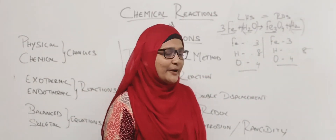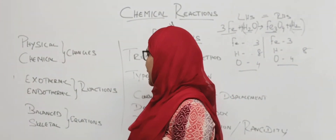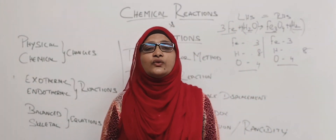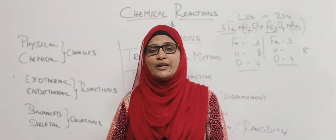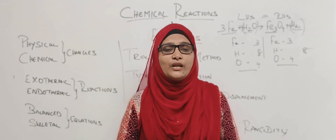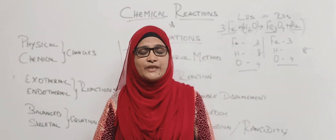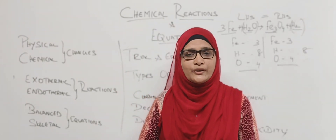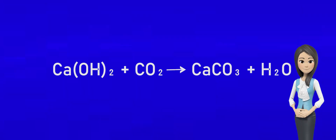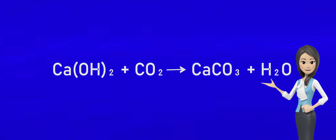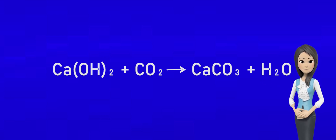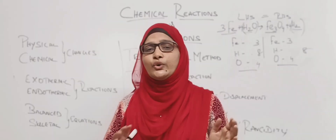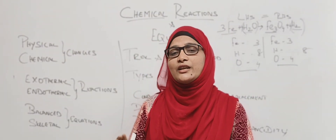Next we are going to see types of reactions. There are totally 5 types of chemical reactions. First: combination reactions. In a combination reaction, two reactants combine together to give a new single product. For example, calcium hydroxide plus carbon dioxide gives calcium carbonate plus water. Also, carbon plus oxygen gives carbon dioxide.